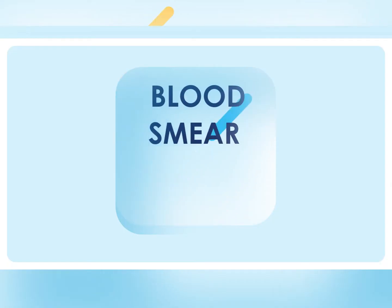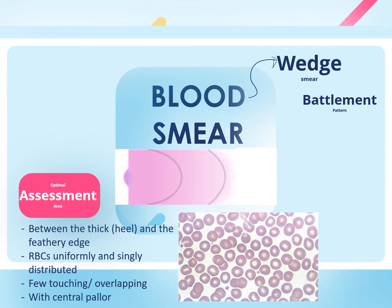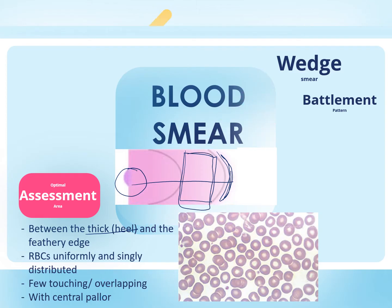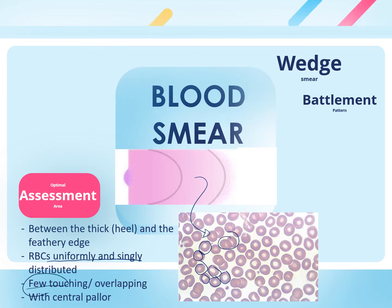White blood cells are counted on a blood smear, and the most common preparation is the wedge smear. When performing a differential count, we locate the area that gives optimal assessment for the different types of WBCs — this is located between the heel (thick part) of the smear and the feathery edge, in the thin middle area of the smear. To confirm we are in the right area, the red blood cells should appear uniformly and singly distributed, with only a few touching each other.